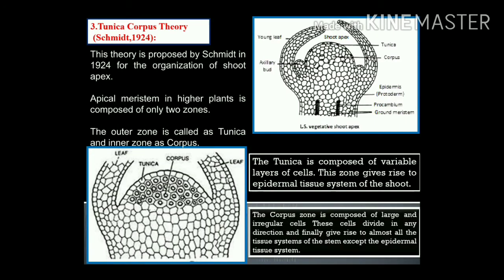The third theory is the tunica corpus theory, proposed by Schmidt in 1924. This theory is applicable to the shoot apex. According to this theory, two types of layers are found in the shoot apex: tunica and corpus. Tunica is the peripheral layer from which the epidermis is formed. In tunica cells, anticlinal division takes place only in one plane, at right angles to the longitudinal axis.